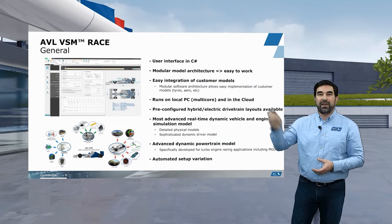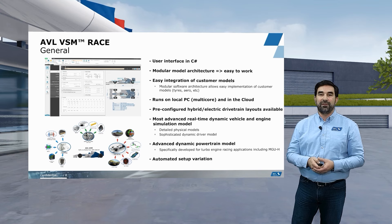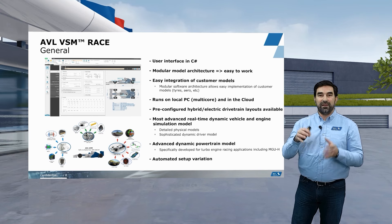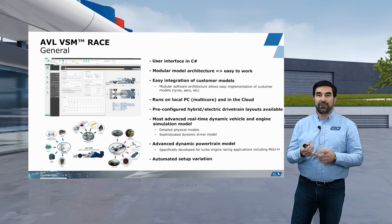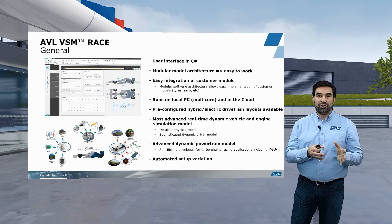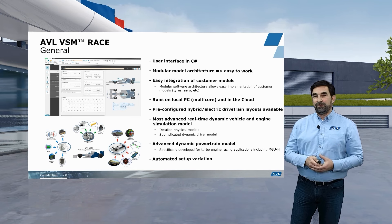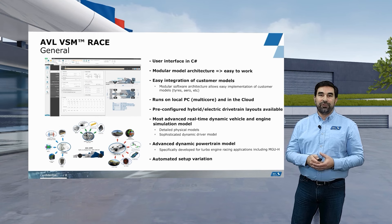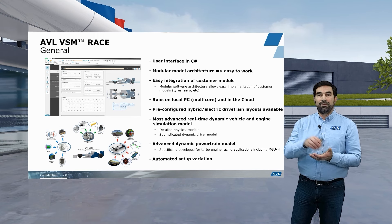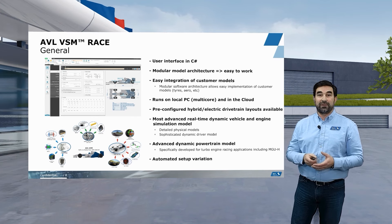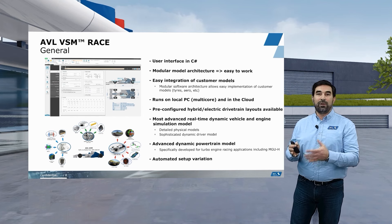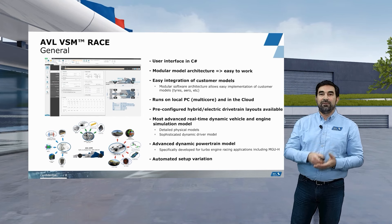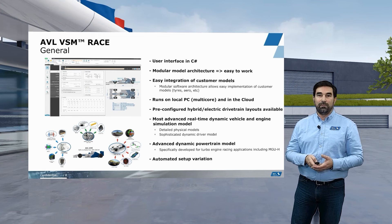VSM Race features a C# user interface with a very modular approach. Inside the software you will find the components in a similar fashion as you would on a real car — for example, springs, dampers, anti-roll bars, engine, gearbox, tires, and more. This modular approach enables us to replace VSM-specific models with what we call customer models. So if a customer has, for example, a tire model or an aero model that he has correlated and developed over a long time, we can easily integrate that into VSM and replace the generic VSM model with the customer model.